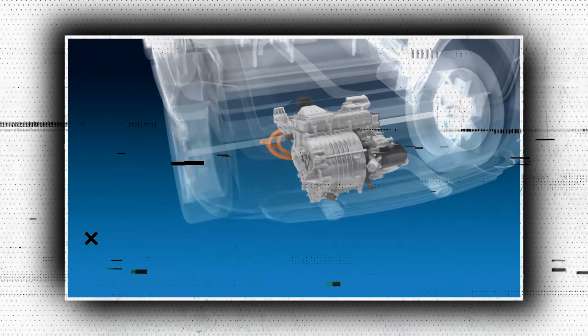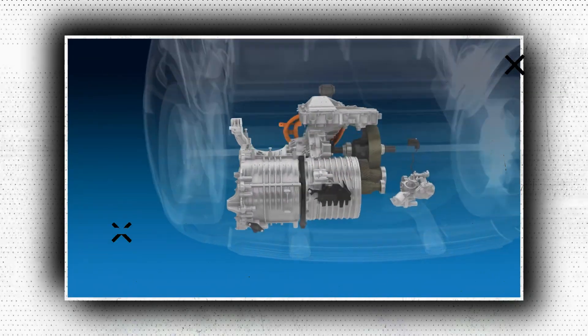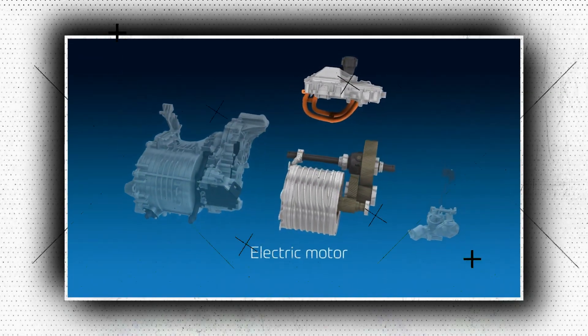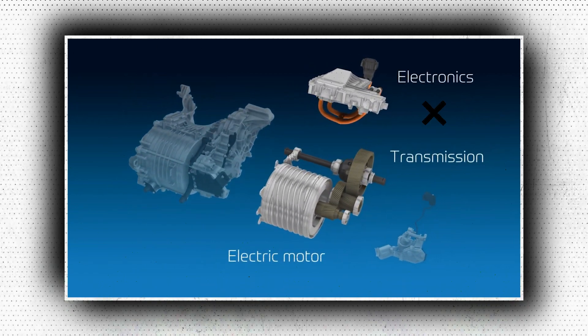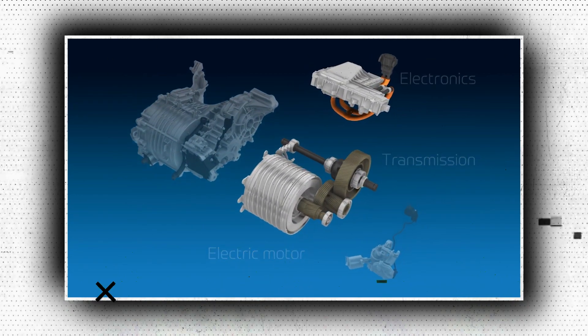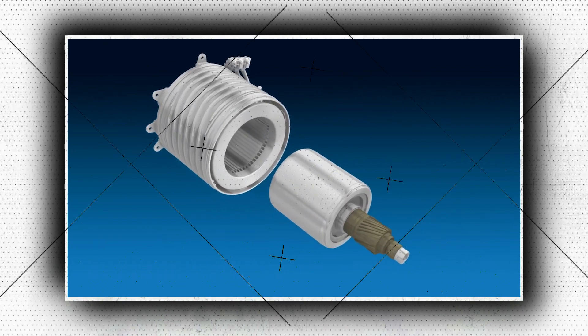What is an e-axle? An e-axle is a drive unit that incorporates the essential elements required to propel a vehicle, such as a battery electric vehicle, using an electric motor as the primary power source into the axle frame.